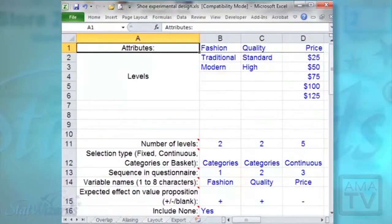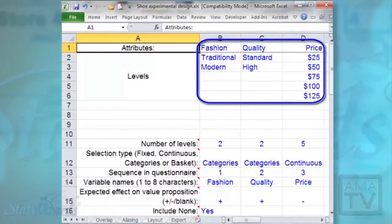Here's an example. A simple shoe market in which customers care about only three things: Fashion, quality, and price. A real product would contain its own set of complex attributes.